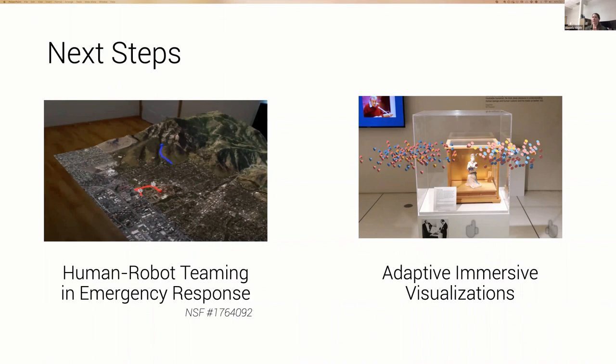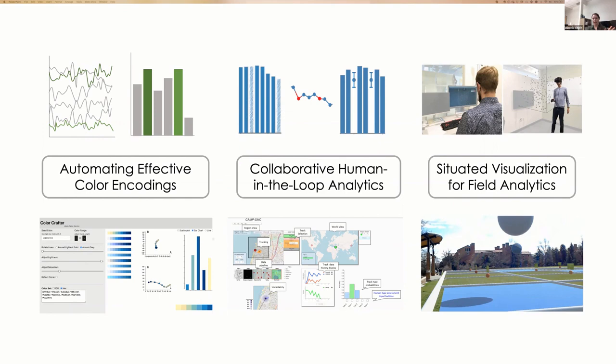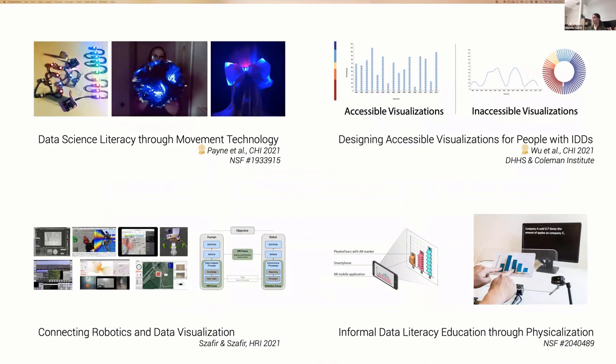Where are we going from here? We have some work with the National Science Foundation looking at how we can expand the integration of situated analytics with robotics in emergency response applications. We're also doing work thinking about how we can adapt our visualizations to be optimized for the environments we're working in. I want to wrap by teasing a little bit of other ongoing work. We have research looking at how do we foster better data science literacy, more inclusive data science, including designing representations for people with intellectual and developmental disabilities, connecting other devices like robotics in visualization, and fostering literacy with physical computing.